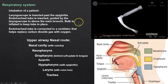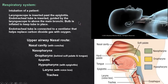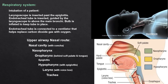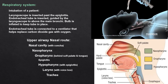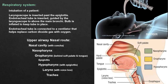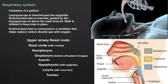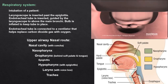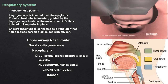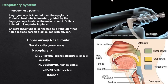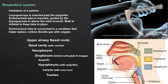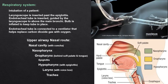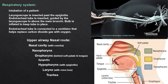This might be you someday. Your patient is struggling to breathe. You tilt the head back to open the upper airway, slide the blunt end of your laryngoscope over the tongue and past the epiglottis. We're going to take the endotracheal tube and guide it down to the trachea, but not too far.